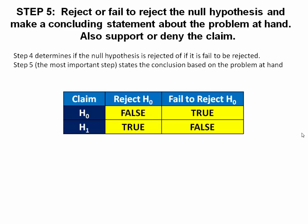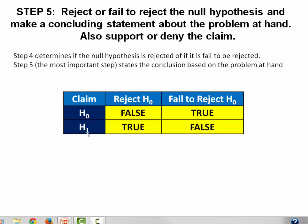In step five, which is the most important step, the conclusions are drawn based on the problem at hand. If our claim is in the null hypothesis and we reject the null hypothesis, then the claim is false. If our claim is in the null hypothesis and we fail to reject the null hypothesis, then our claim is true. On the other hand, if our claim is in the alternative hypothesis and we reject the null hypothesis, then our claim is true. If our claim is in the alternative hypothesis and we fail to reject the null hypothesis, then our claim is false. This is the information we use to make our final decisions about the outcome of our hypothesis testing.